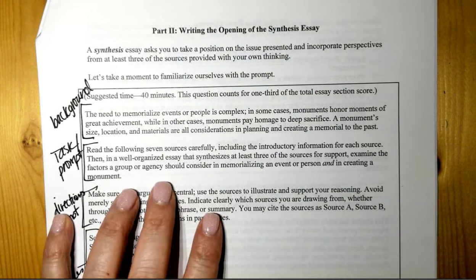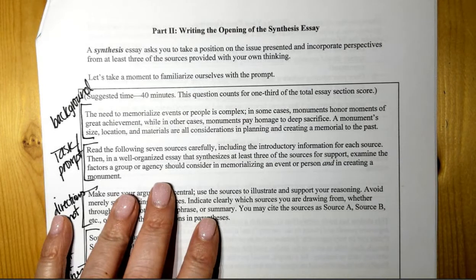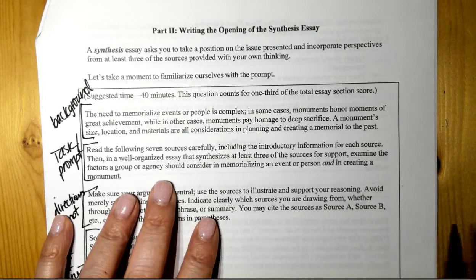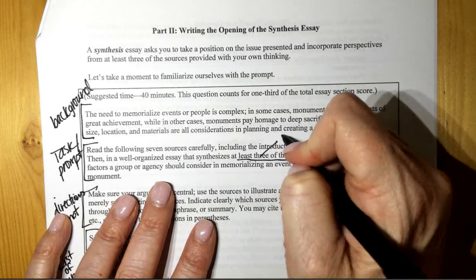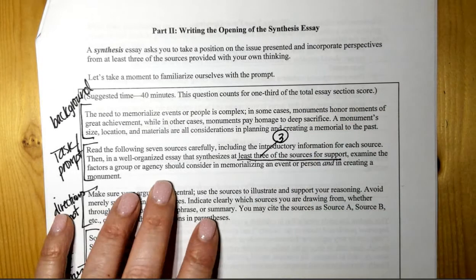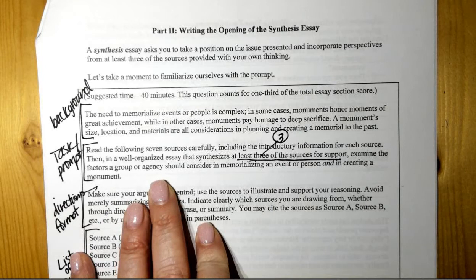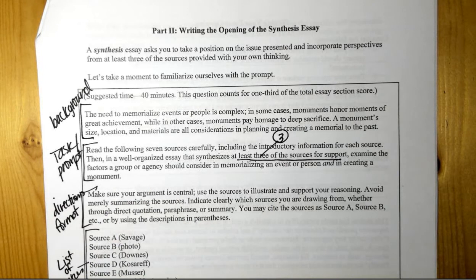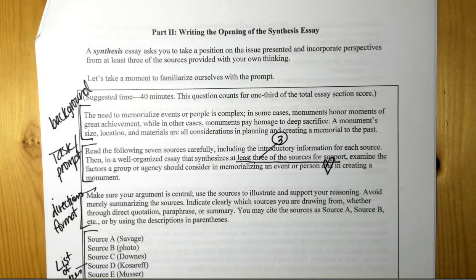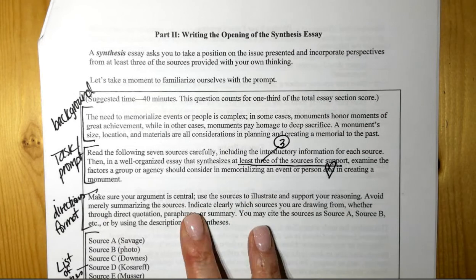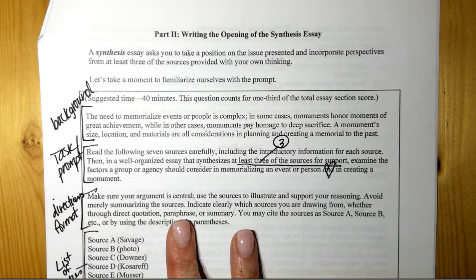All right, so here's your task or prompt. Read the following seven sources carefully, including the introductory information for each source. Then in a well organized essay that synthesizes at least three sources for support. So you have to have at least three. I'm going to tell you how to have more later. More does not always mean better. Examine the factors a group or agency should consider in memorializing an event or person and in creating a monument. Okay, so there are two parts to this essay. So then you don't have to read the directions or format because they're always the same, but I'll read them to you now.